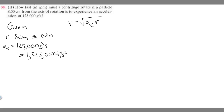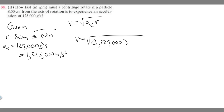Now we have both values in meters and meters per second squared, so we can plug them in. V is equal to the square root of A sub C, which is 1,225,000, multiplied by the radius, which is 0.08. This gives us our velocity. If you go ahead and compute that, the velocity is 313 meters per second.